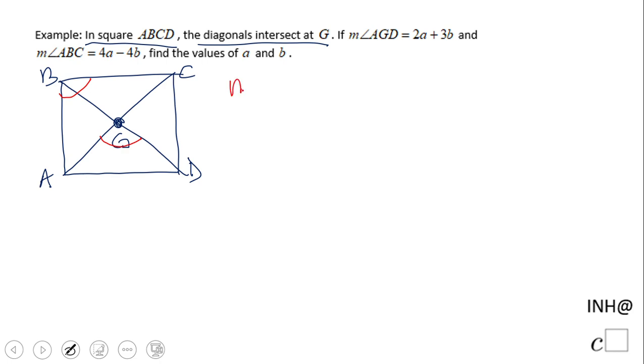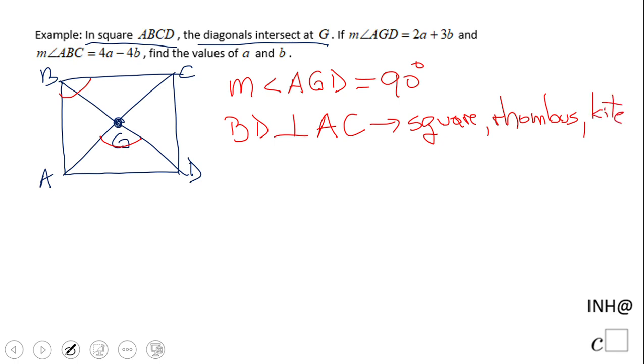The measure of angle AGD is 90 degrees. Why? Because diagonals BD and AC are perpendicular. This is a property of squares and rhombuses - these shapes have perpendicular diagonals.